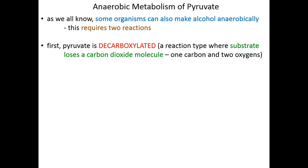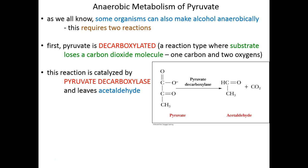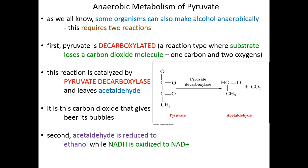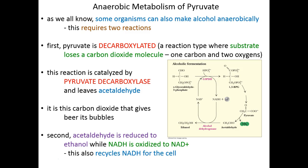First, pyruvate is decarboxylated — a reaction where the substrate loses one carbon and two oxygens, losing a carbon dioxide molecule. When pyruvate is decarboxylated, we yield carbon dioxide and also produce acetaldehyde, a two-carbon molecule. This reaction is catalyzed by pyruvate decarboxylase — a wonderful name that describes exactly what it does. For fermenting organisms, this carbon dioxide contributes to the fizz we find in beer and champagne. The second reaction takes acetaldehyde and reduces it to ethanol. The donor of protons and electrons for that reduction is NADH, which is oxidized back to NAD+, once again regenerating NAD+ for early stages of glycolysis.